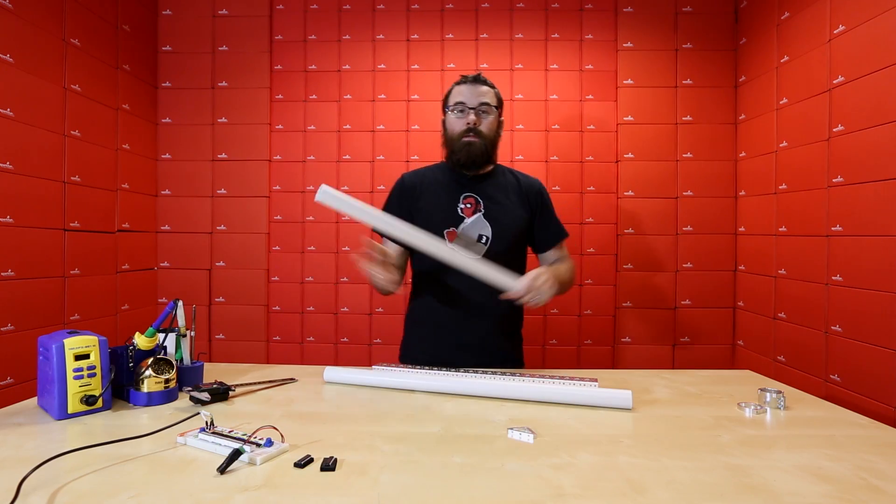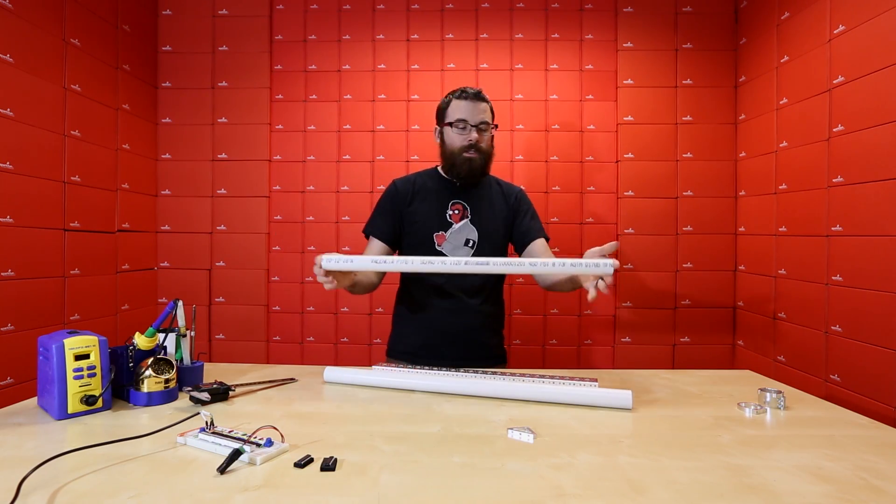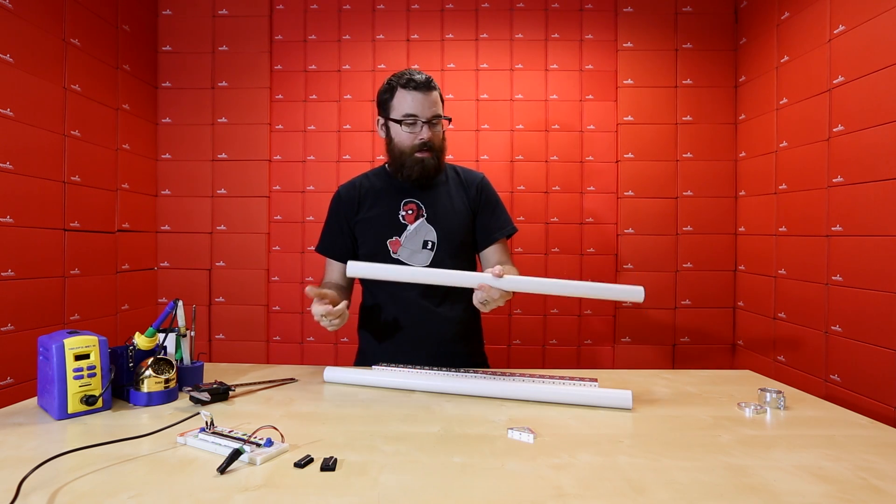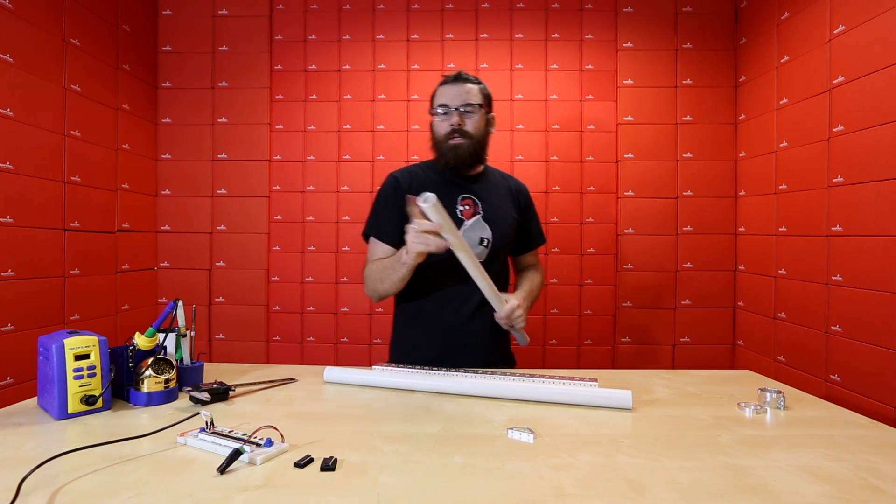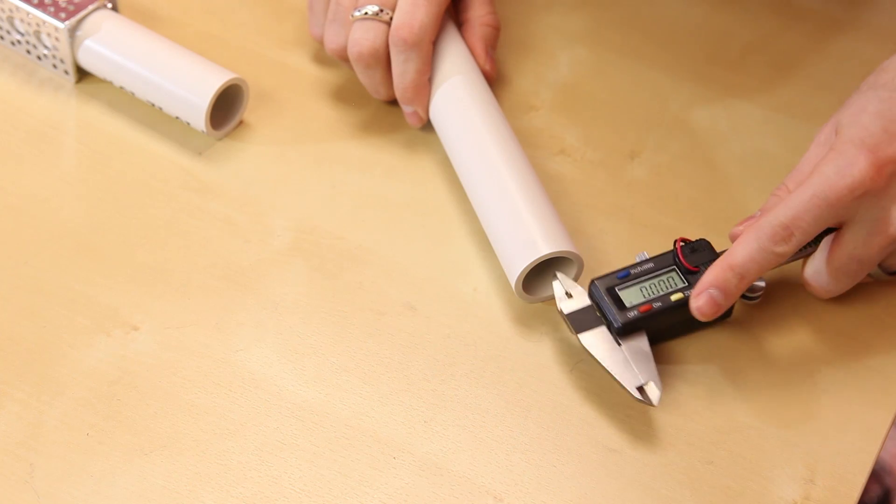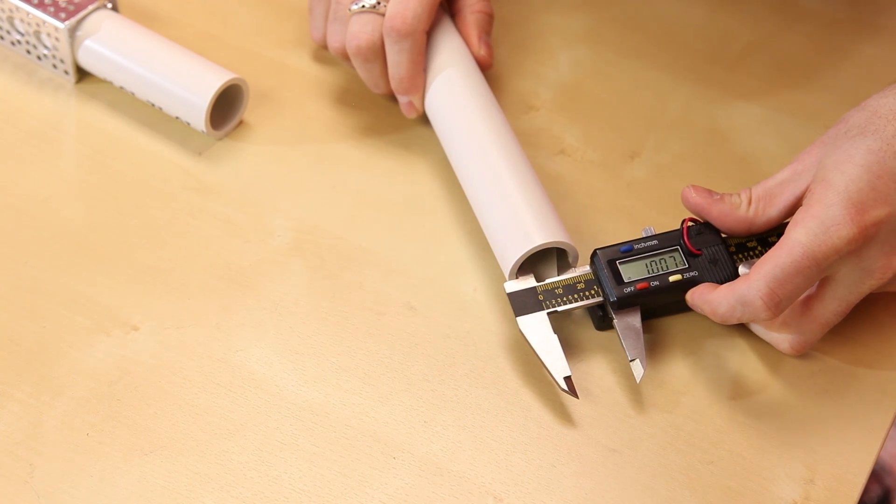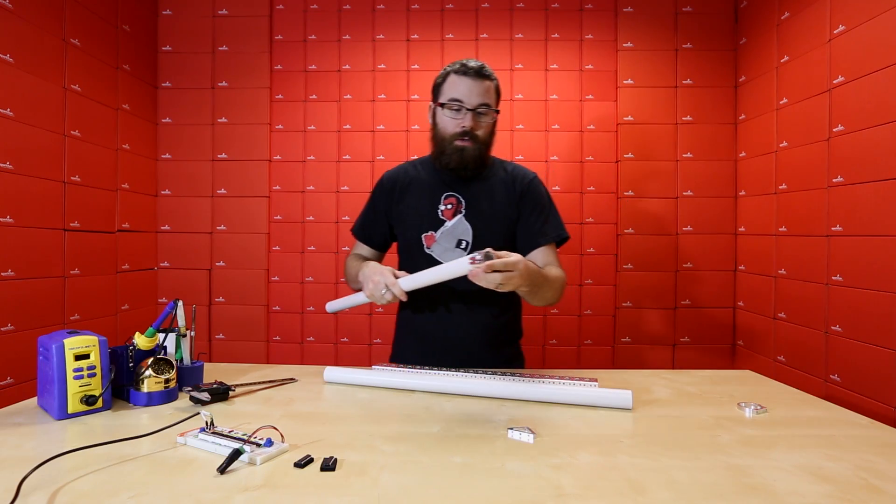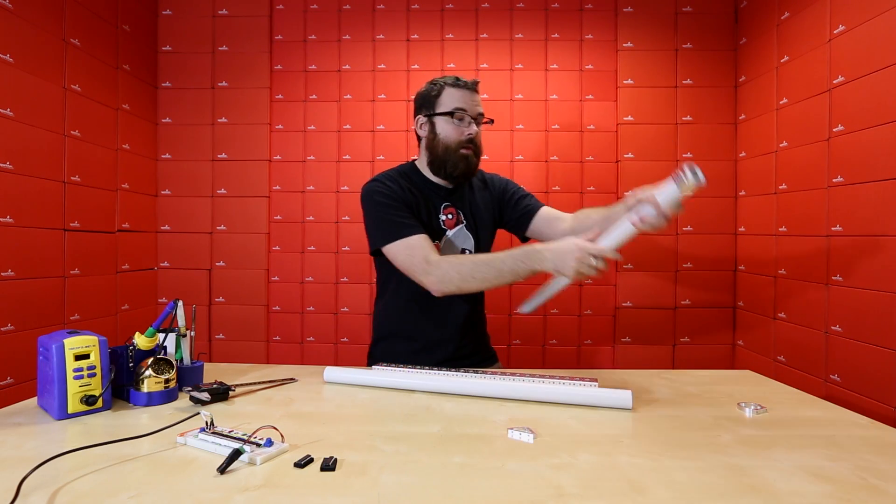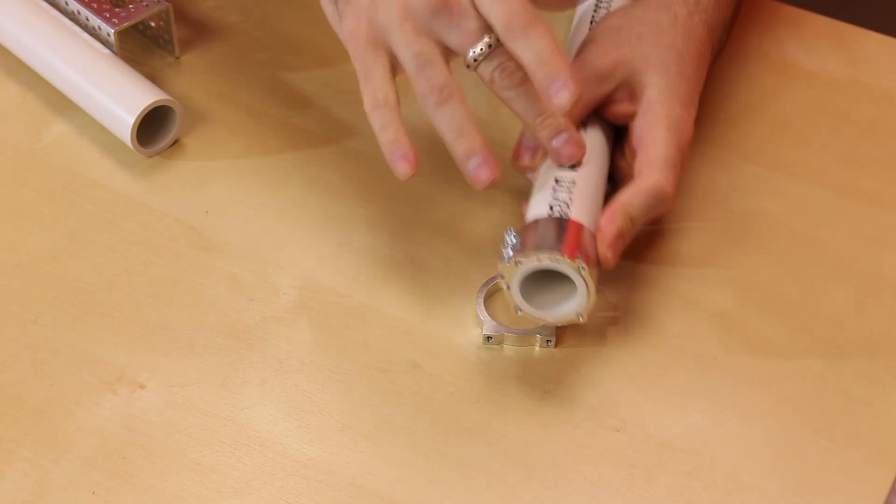This is PVC pipe just from Home Depot. These sections are two foot and these were like a buck 70 at Home Depot so it's actually really cheap and it's really strong. This is one inch pipe and the one inch is actually the inner diameter of the pipe so the outside is like 1.3 or something like that.